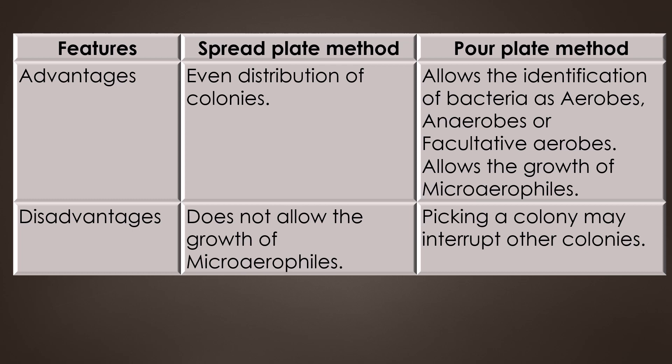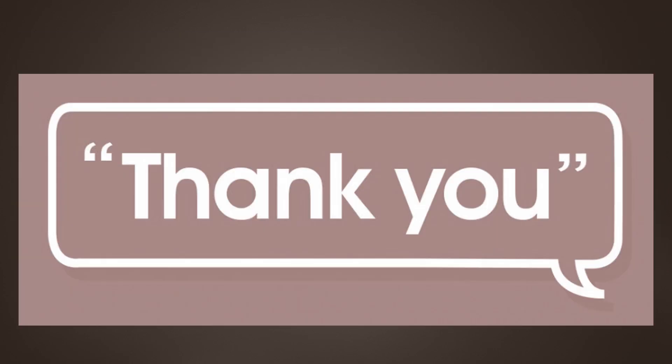Finally, regarding disadvantages: the spread plate method does not allow the growth of micro-aerofiles, and in the pour plate method, picking a colony may interrupt other colonies. That's all about the difference between the spread plate method and pour plate method. Thank you for your support.